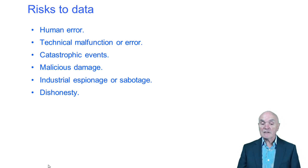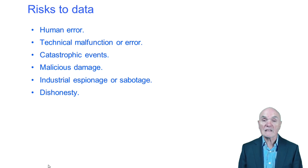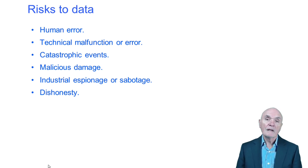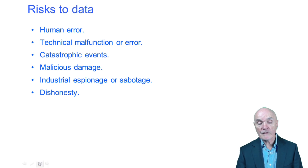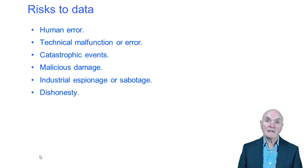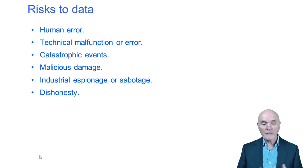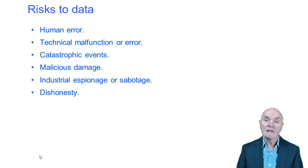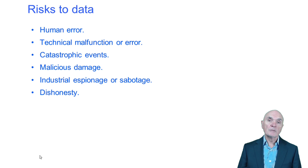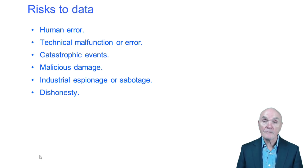Industrial espionage and sabotage are also much in the news — people hack into systems and extract plans for machinery, strategic plans, and so on. Finally, there is dishonesty — basically fraud — where people change or steal data to enrich themselves. All of these risks have to be guarded against through measures such as passwords, physical logons like fingerprints or retina scans, anti-virus software, and anti-hacking software to prevent unauthorised access.